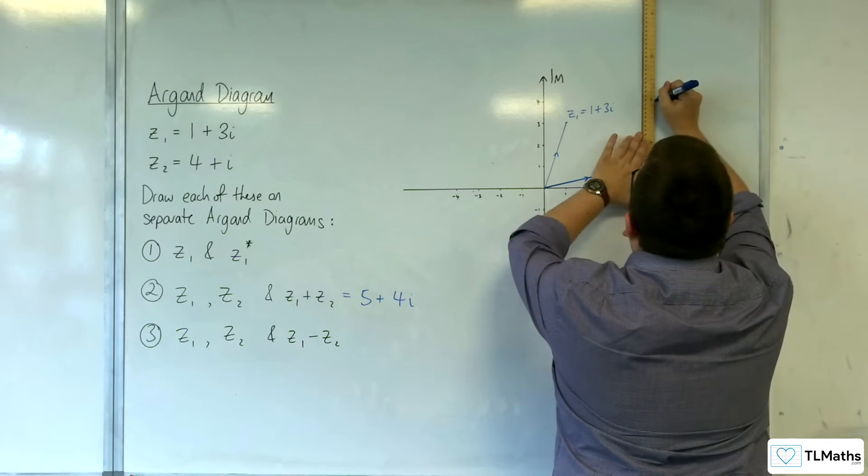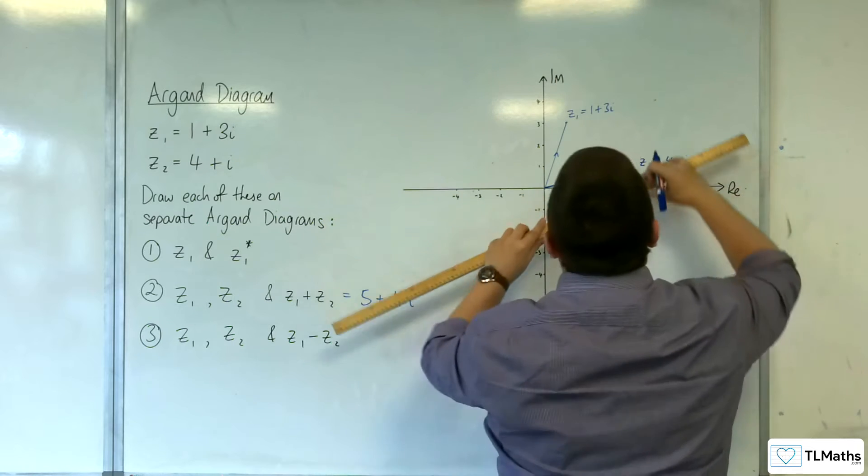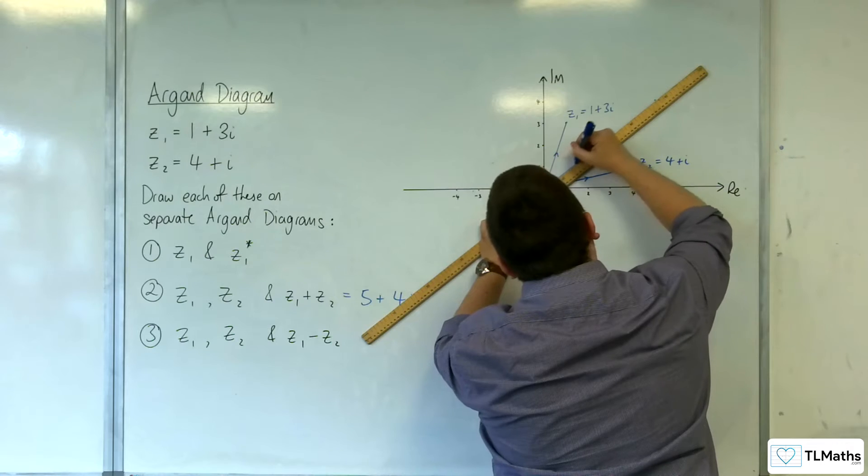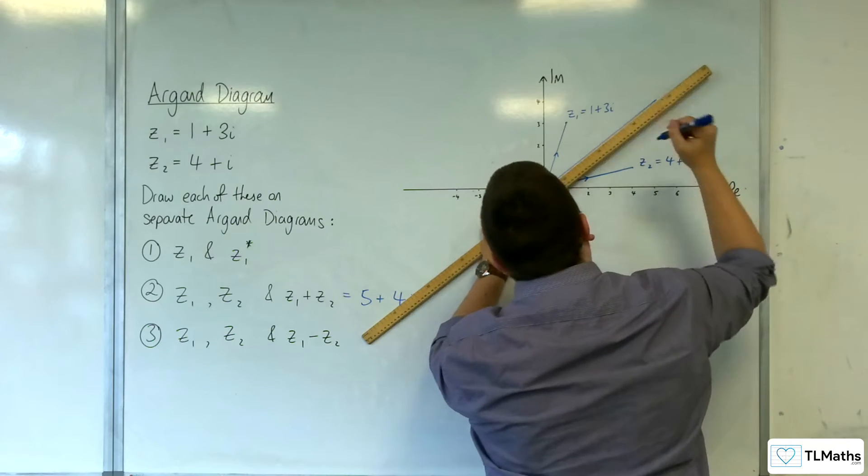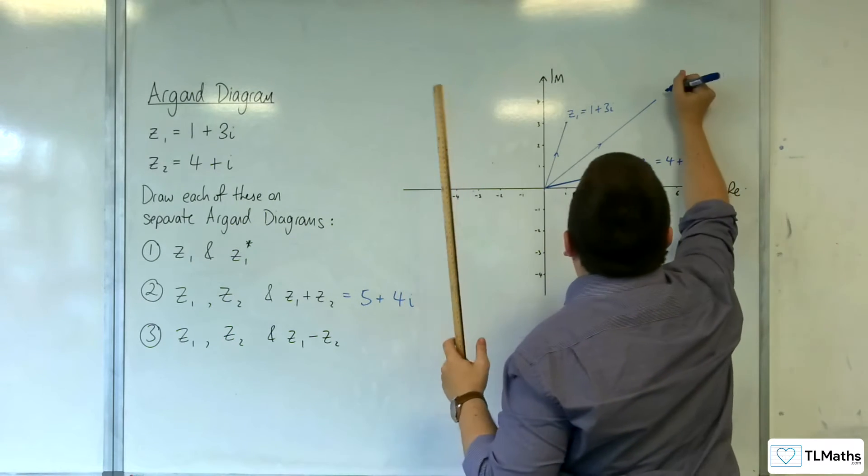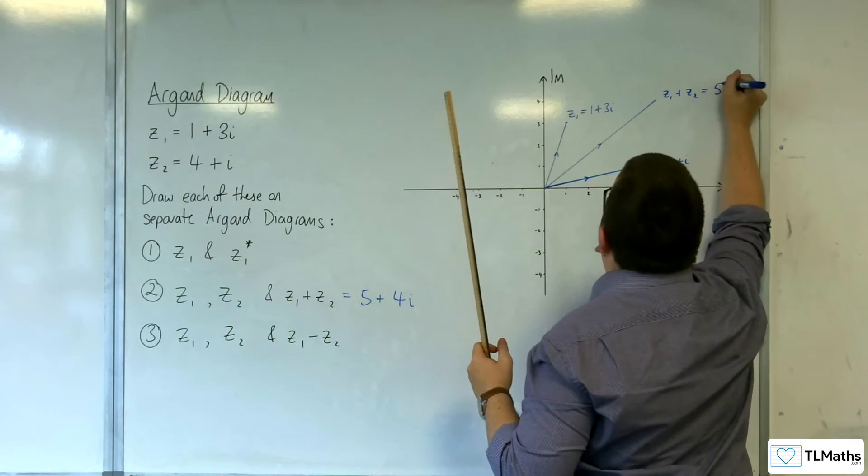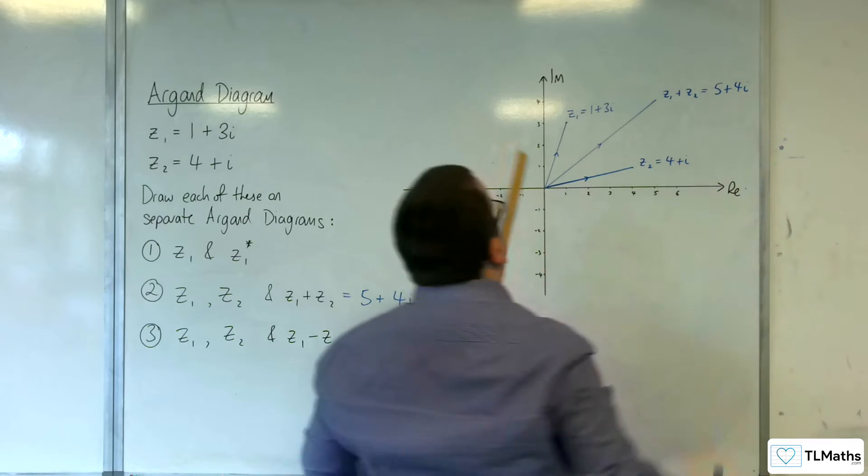So, I'll be back there. Okay. So, there is Z1 plus Z2. So, 5 plus 4i. Now,